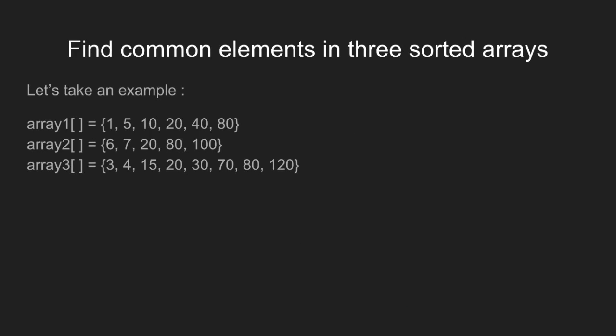Let us now look at an example. Here we have three arrays array 1, array 2 and array 3. These arrays may or may not have equal number of elements and are sorted in increasing order. We can clearly see that 20 and 80 occur in all the three arrays. So our output should be 20 and 80.